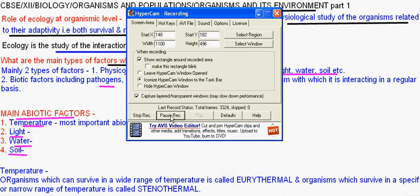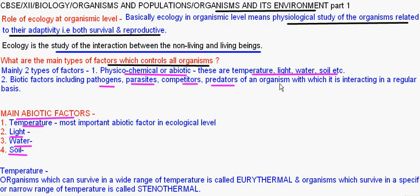Coming to the role of temperature: temperature is one of the most important abiotic factors on which all living beings depend. At the organismic level, temperature controls all metabolic activity by controlling enzyme kinetics or the rate of enzymatic reactions. In turn, temperature controls all the biotic activities of a living being.